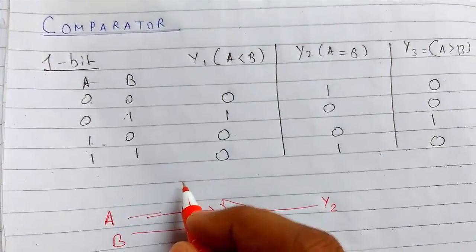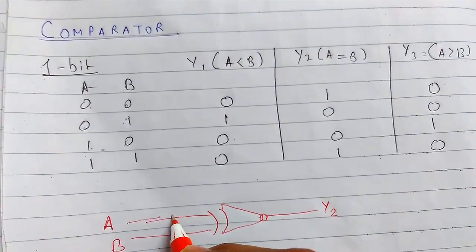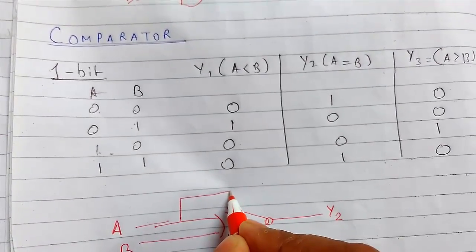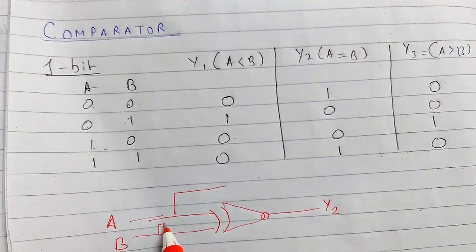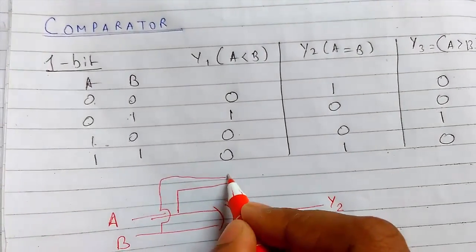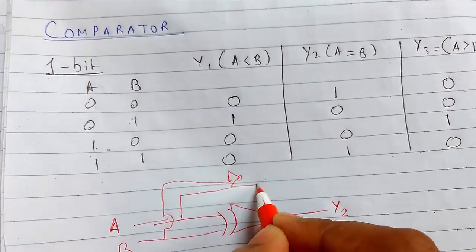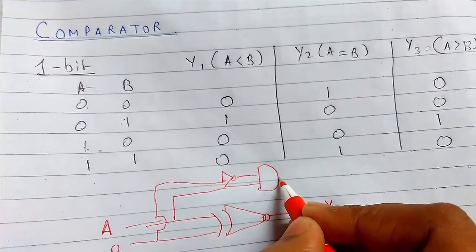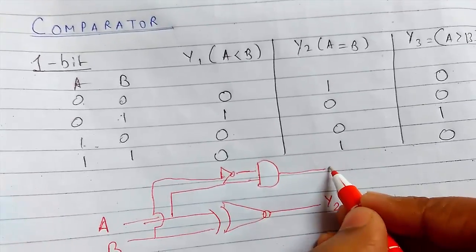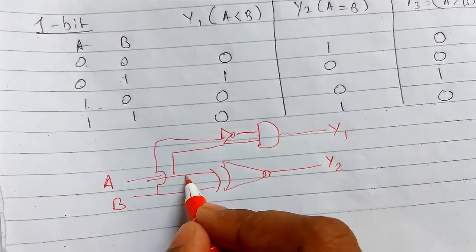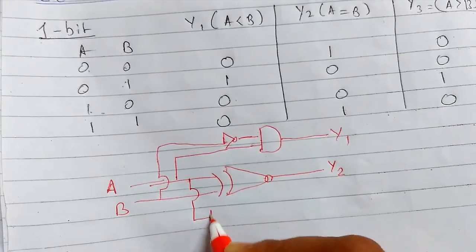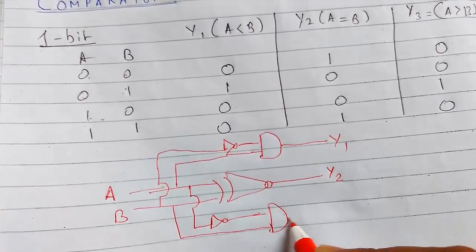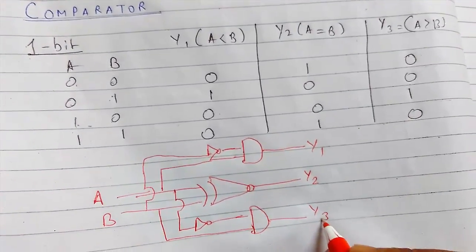And for y1, what we need to do is we will pass through a NOT gate because we want to make it zero, and we will pass through AND gate. So this will be the y1. And for this it will be y3.